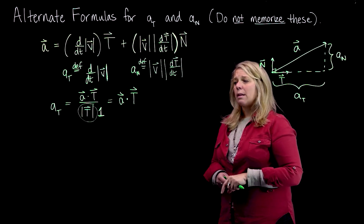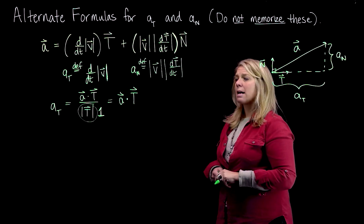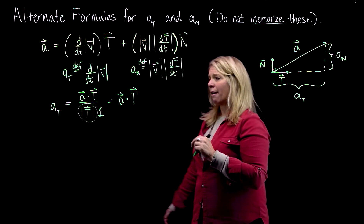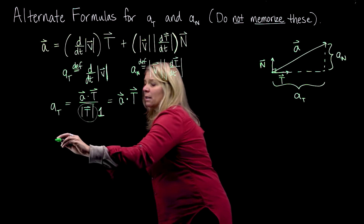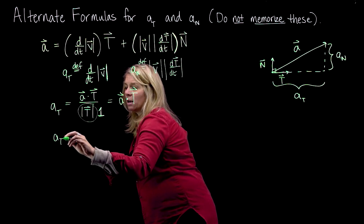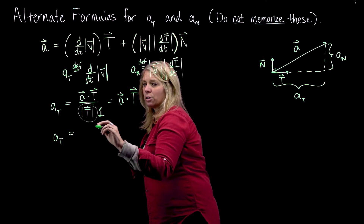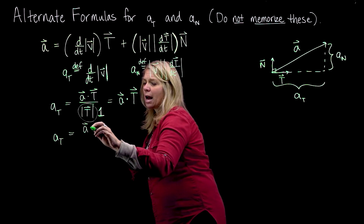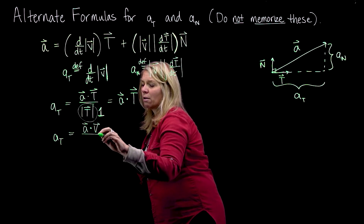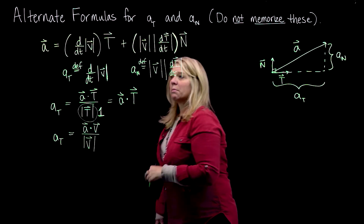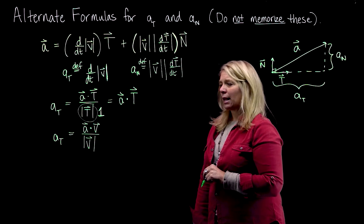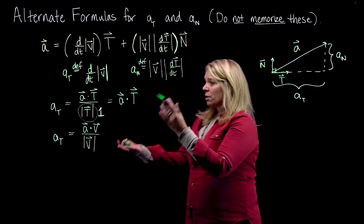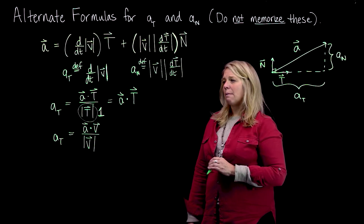Remember that the unit tangent vector can be written as the velocity vector divided by its magnitude, so the velocity vector is a scalar multiple of the unit tangent vector. If I replace the unit tangent vector with V divided by |V|, I get A dot V divided by |V|, or A·V / |V|. So that's another formula for the tangential component of acceleration, obtained by substituting the velocity vector for T.